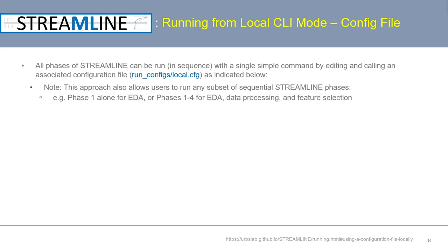For example, a user could decide to run phase 1 alone to look at the exploratory data analysis for summarizing and understanding their data better. Or they could run phases 1 through 4 — running everything up until modeling — using the Streamline output to guide decisions about which machine learning algorithms to use in phase 5. Running a subset of phases can be achieved by editing phase-to-run flags as run parameters in the configuration file.